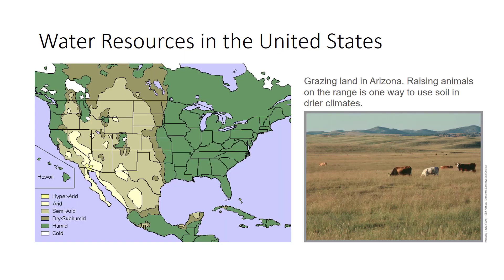An average of 30 inches of precipitation falls each year over the continental United States, but the supply of water is unequally distributed. Average annual precipitation ranges from 9 inches in Nevada to 55 inches in Louisiana. Eastern states and the Pacific Northwest coastal areas tend to have higher rainfall, while most western states have a more arid climate and depend on irrigation to grow many crops.